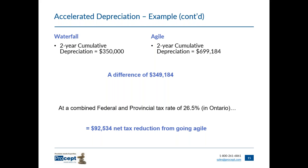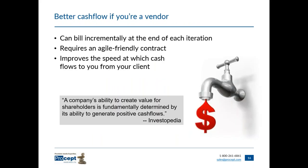At a combined federal and provincial business tax rate in Ontario, Canada of 26.5%, switching to an agile approach results in a net reduction of $92,534 in taxes over the two years. If releases were more frequent, the tax benefits would be even greater. Note: I'm not a lawyer, accountant, or tax law expert — the example is based on my own understanding and should not be taken as legal or tax advice. Consult your own advisors for how these principles may affect you in your jurisdiction.